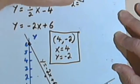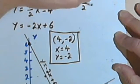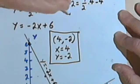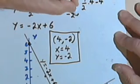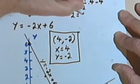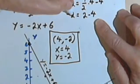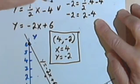Negative 2 equals 1/2 times 4 minus 4. Well, negative 2 equals 1/2 times 4 is 2, minus 4. 2 minus 4 is negative 2. So the first equation checks.